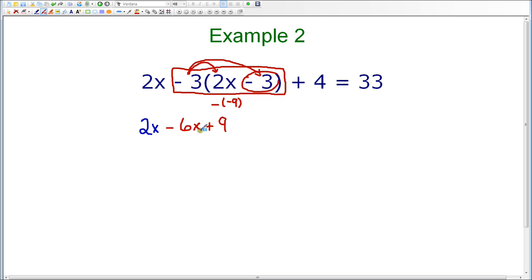So, now we have 2x minus 6x plus 9. And then on the left-hand side, this is not included in the distributive property, the plus 4. And then on the right-hand side, we have equals 33. So, in step 1, all I've done is take the negative 3 and distribute it throughout the parentheses.